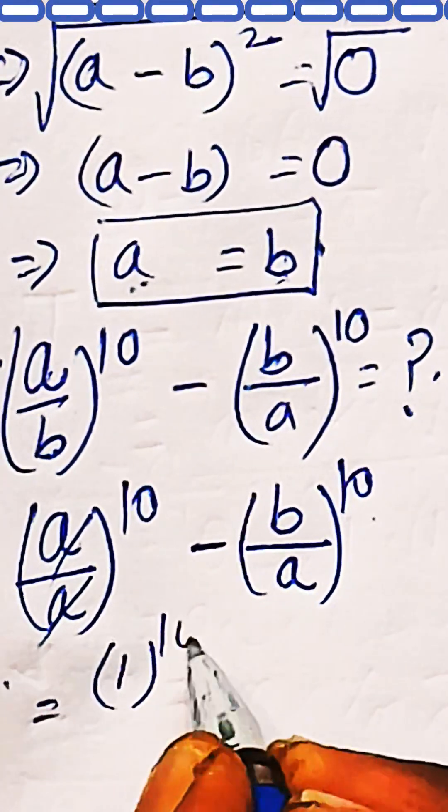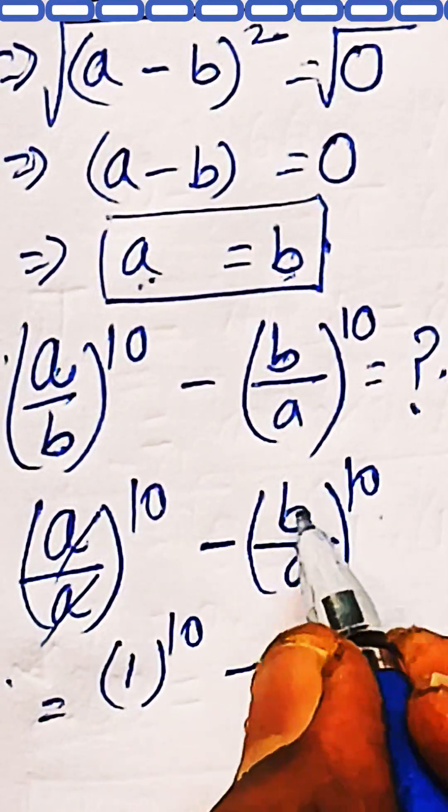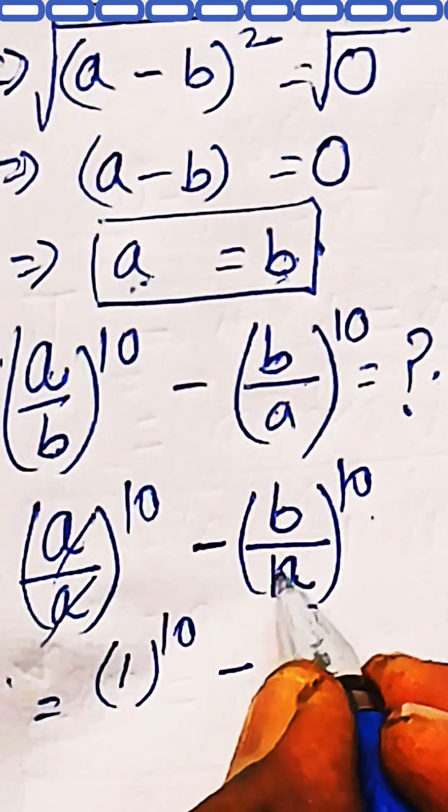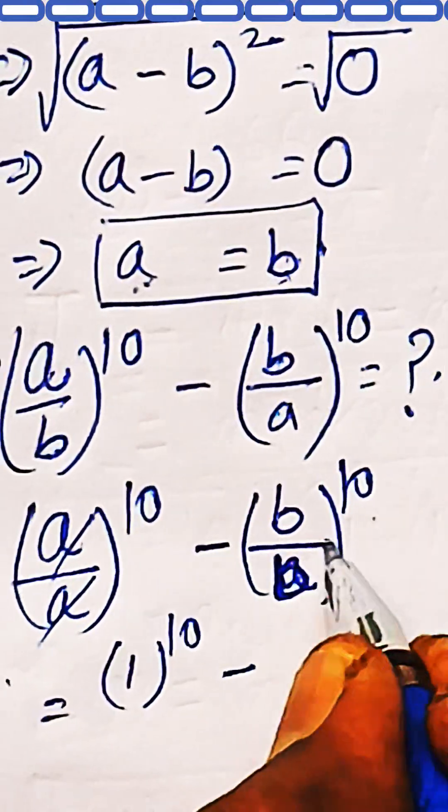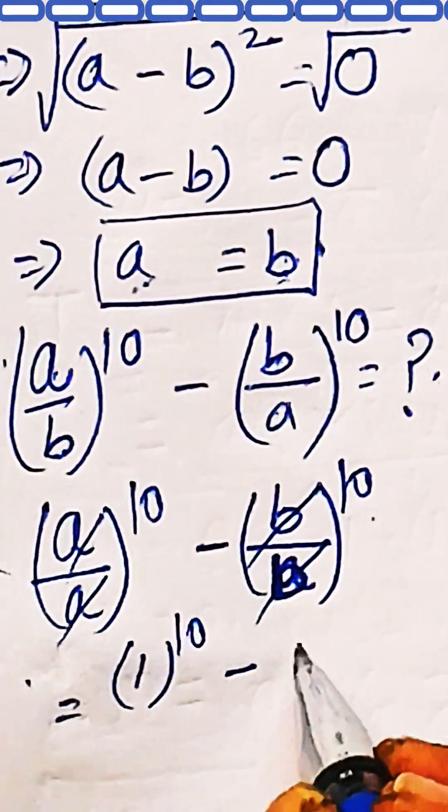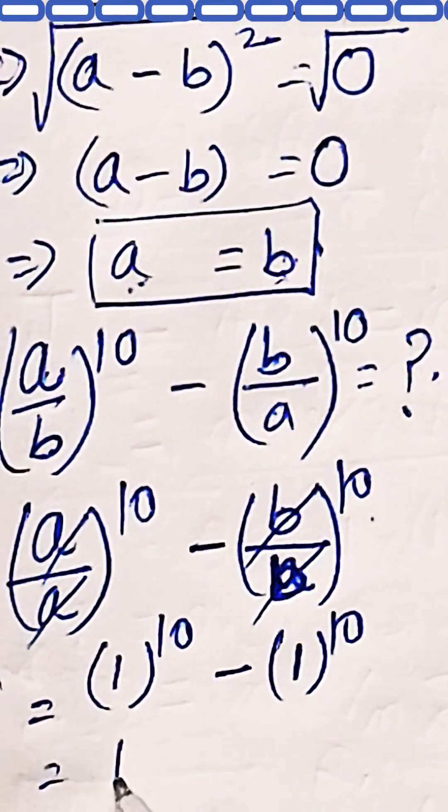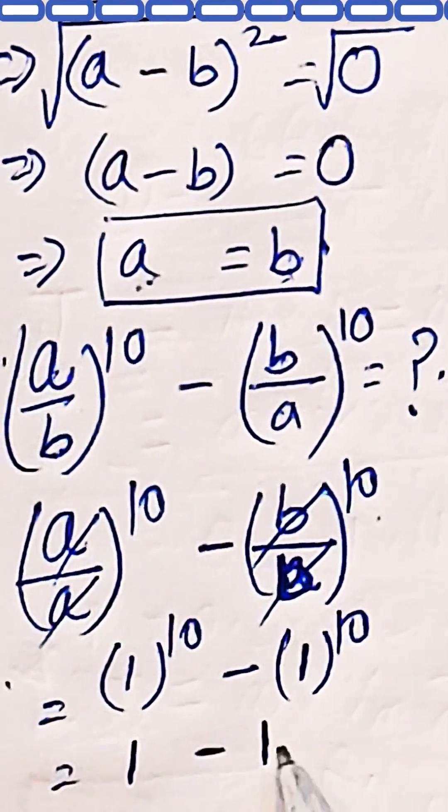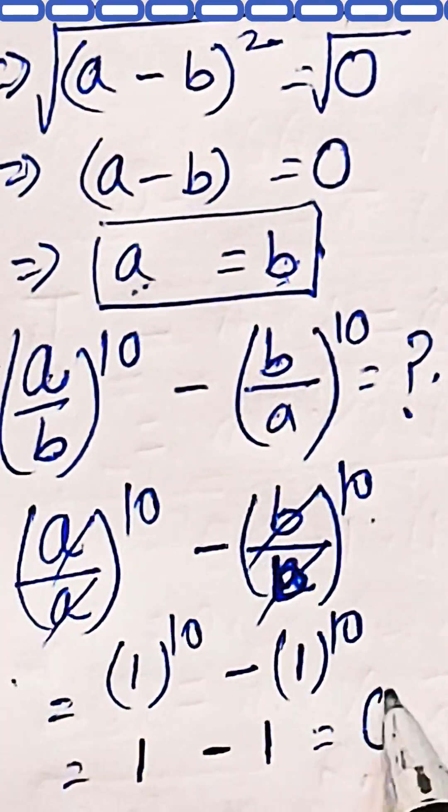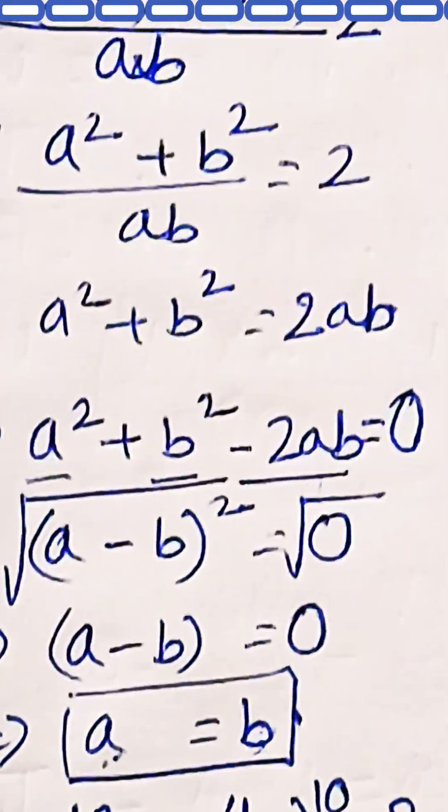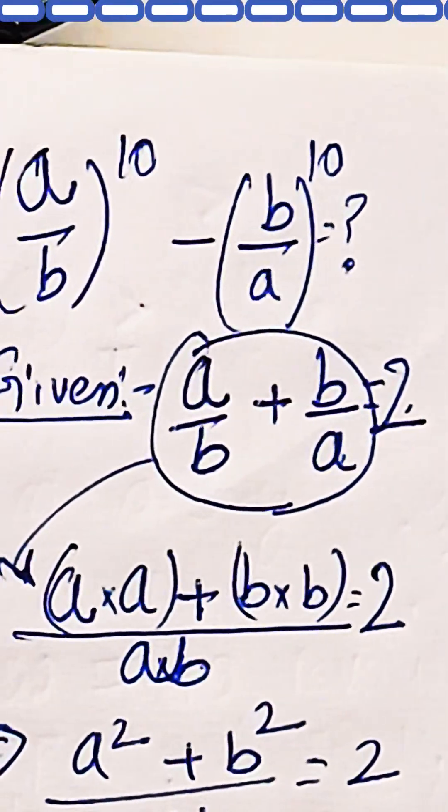So the first one will be 1^10. The denominator should be b, so b will be canceled out and here again in the second term, it is 1^10. 1^10 is 1 subtracted with 1^10 which is 1. And the answer is 0. So the value of (a/b)^10 minus (b/a)^10 is 0.